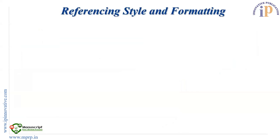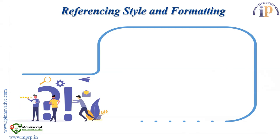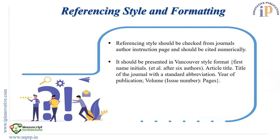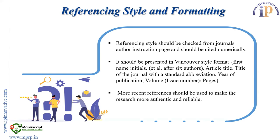Referencing style and formatting is another very important parameter of the paper, and it should be checked from the journal's instruction page, as it varies from journal to journal. Some journals ask for APA styling, some ask for Vancouver. At IP Novative we ask for Vancouver style format, and references should be cited numerically. In Vancouver style, the first name initial of the author comes first, then the last name; if more than six authors are listed, all should be included. Then comes the article title, the title of the journal with standard abbreviation, year of publication, volume, issue number in brackets, and page numbers. More recent references should be used to make the research more authentic and reliable.